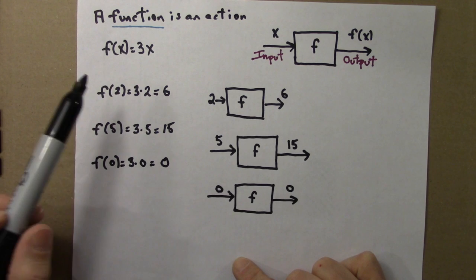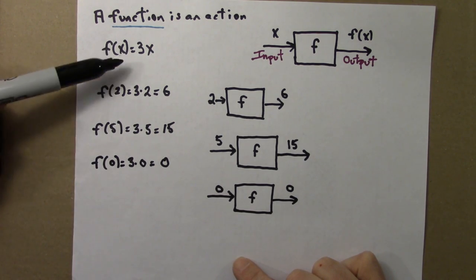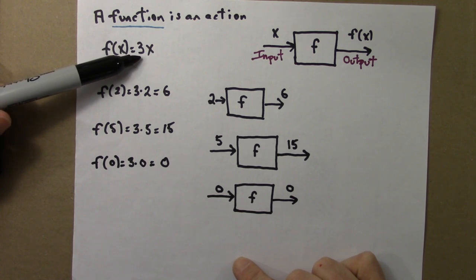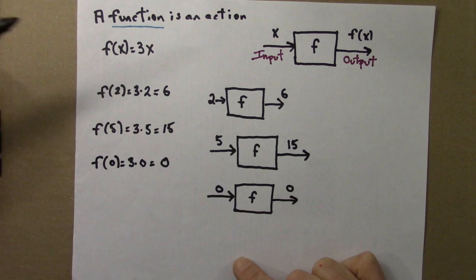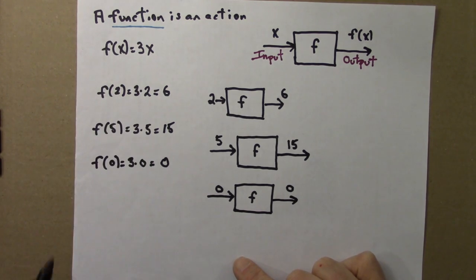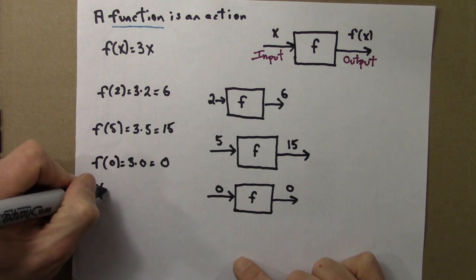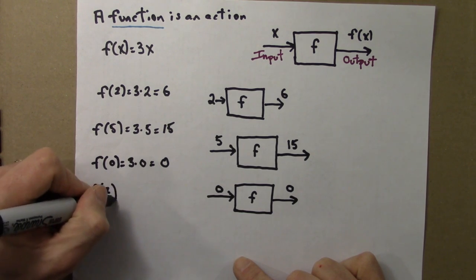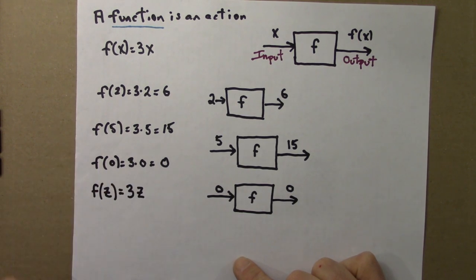So the rule is x is the input, and then you evaluate the output on the right-hand side here by replacing whatever the input number is on the right. So here we have a 2, we replace x with 2. Here we have a 5, we replace x with 5. If, for example, we had f acting on some other variable, the letter z, that would be just 3 times z. The actual value would depend on z.